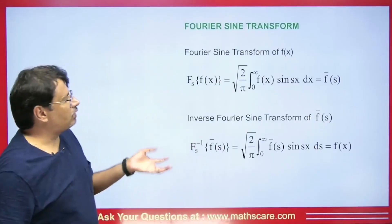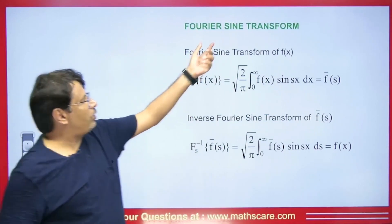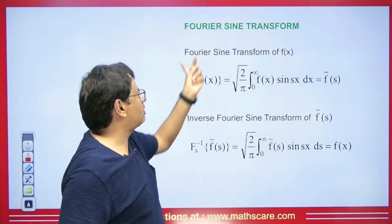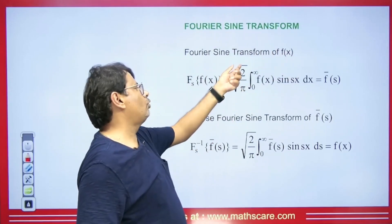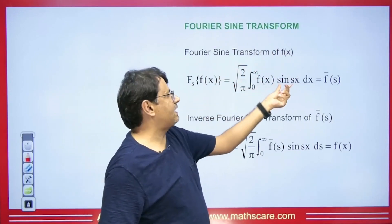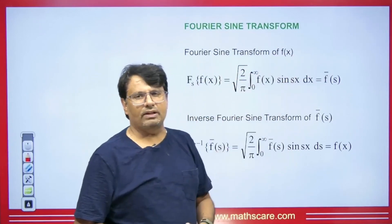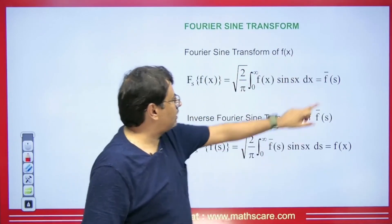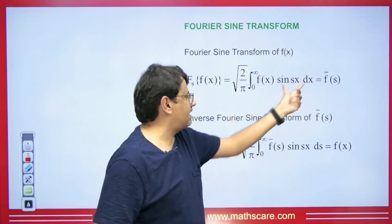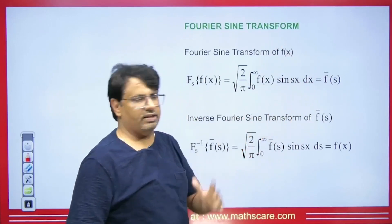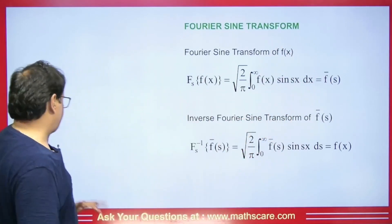The formula for the Fourier sine transform: if we have any function f(x) and we have to find its Fourier sine transform, the formula is root(2/π) from 0 to infinity of f(x) sine(sx) dx. The value of this integral is given in the form of s. If you need to find its inverse, then f(s) comes here and f(x) goes there, integrating with respect to s. This is called the inverse Fourier sine transform.